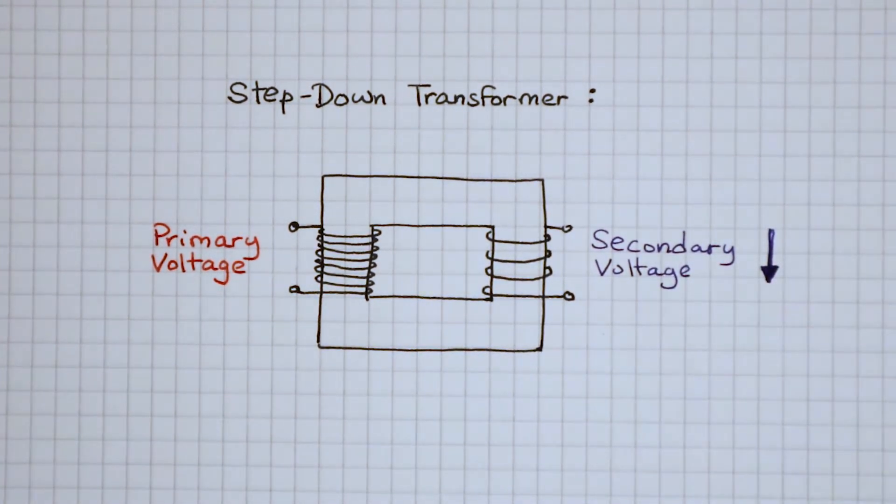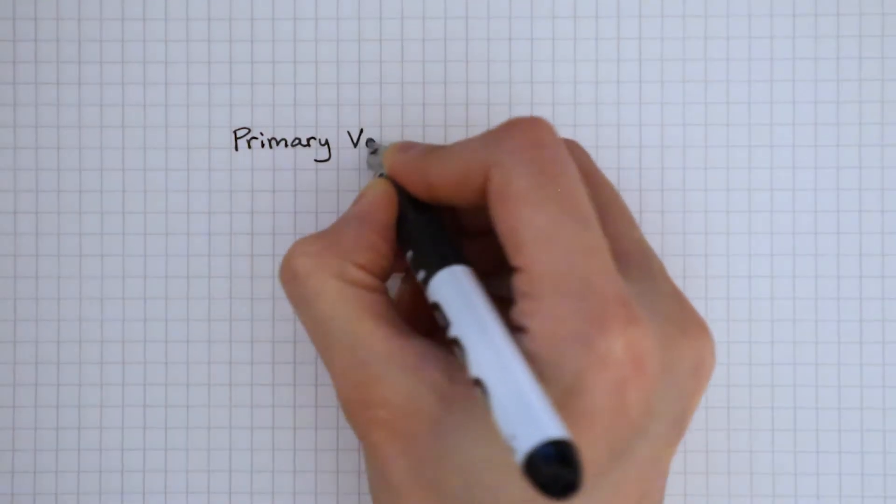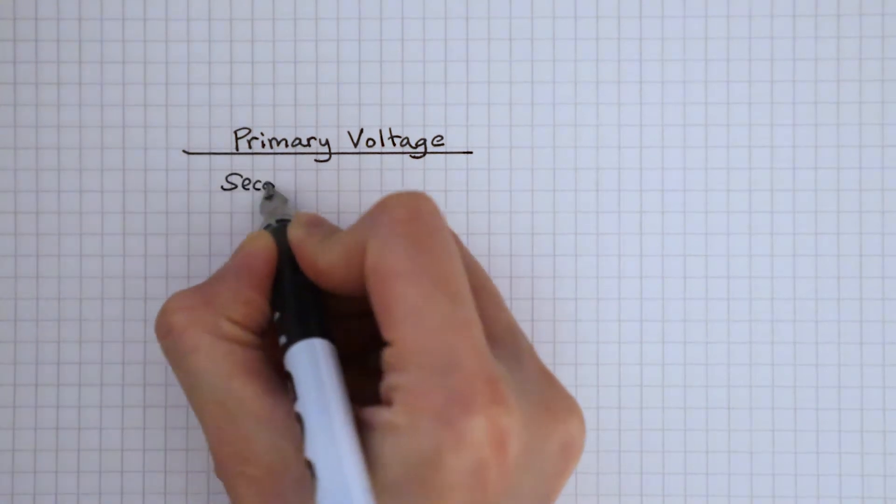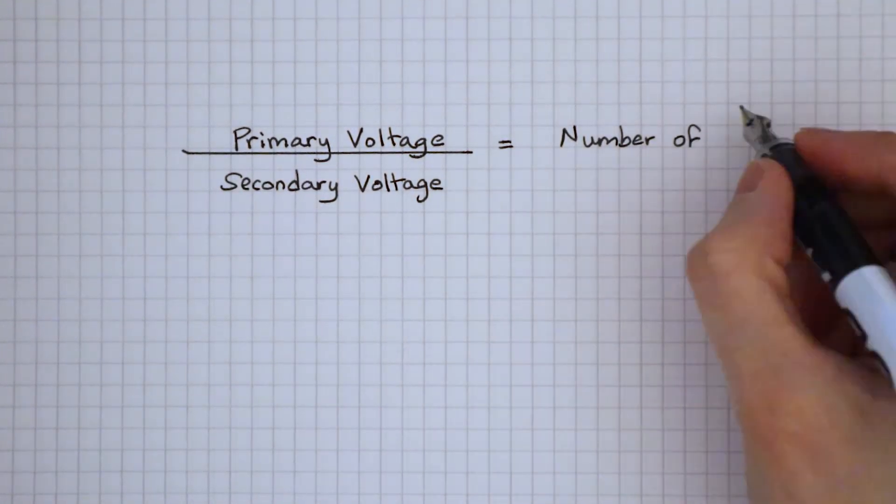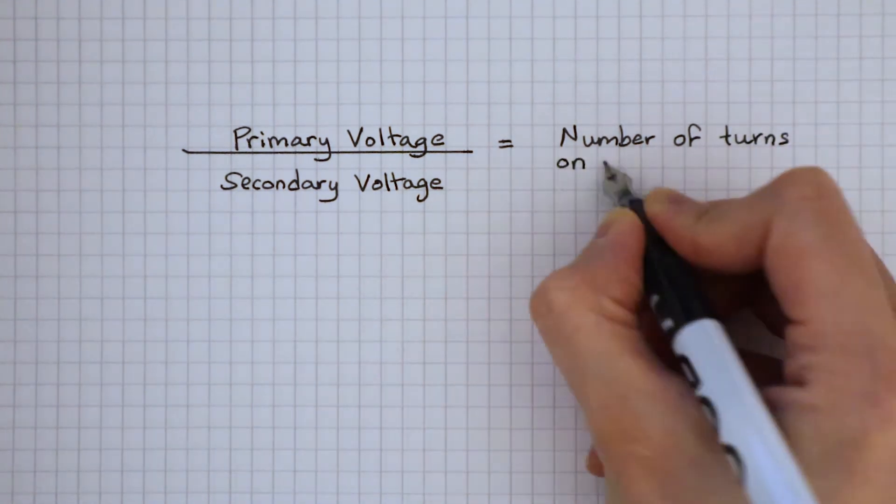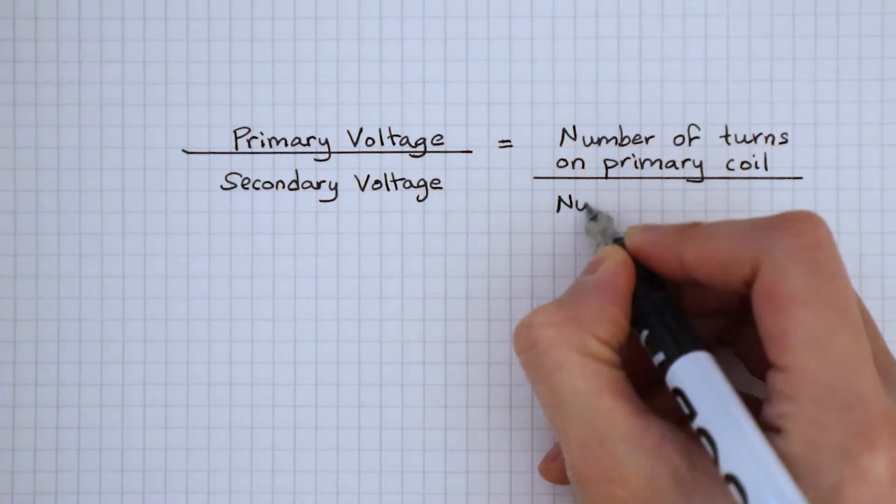The voltage and the number of turns on the coil are related by an equation. Primary voltage divided by secondary voltage is equal to the number of turns on the primary coil divided by the number of turns on the secondary coil.